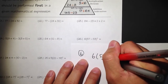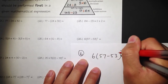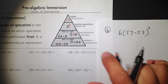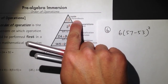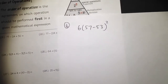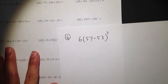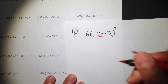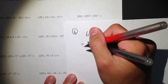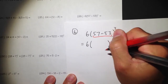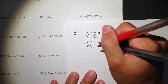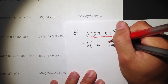The next one: I have 6 parentheses 57 minus 53 parentheses squared. According to the order of operations, we see we have parentheses, so we need to work out the inside of the parentheses first. The inside is 57 minus 53 — if we subtract that, we get 4. Anything else stays the same, so we bring down the 6 and the parentheses, and the result of 57 minus 53 is 4. We still have the square — the second power.